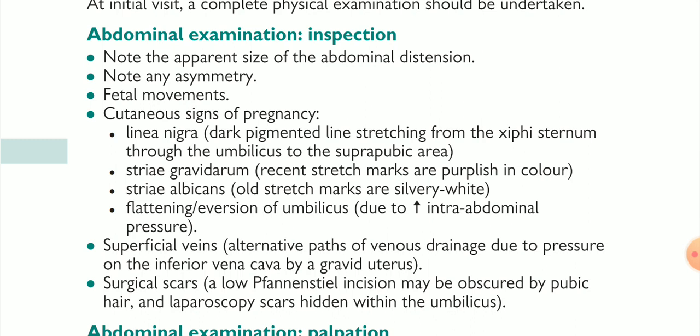Number two: note any asymmetry — we have to know whether the abdomen is symmetrical or not. If there is some anomaly in the uterus, it may lead to asymmetrical conditions. Number three: fetal movement, which is a very important sign for the well-being of the fetus. If the mother feels fetal movement, it means the fetus is in a well-being condition.